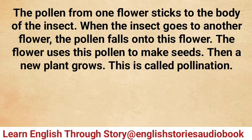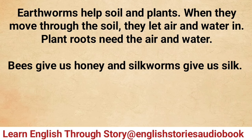When the insect goes to another flower, the pollen falls onto it. The flower uses this pollen to make seeds, then a new plant grows. This is called pollination.